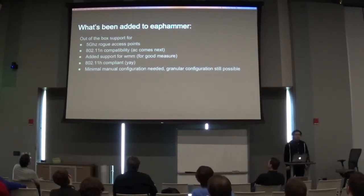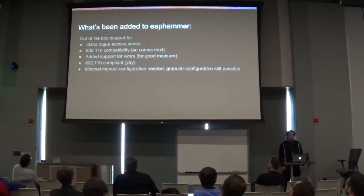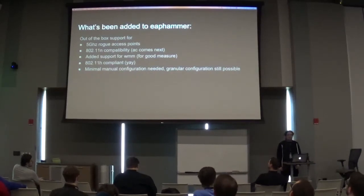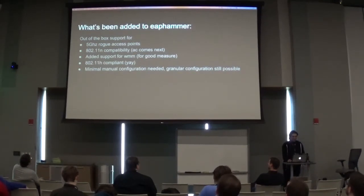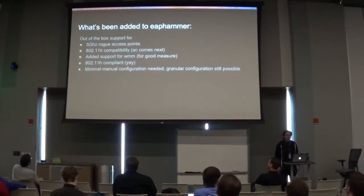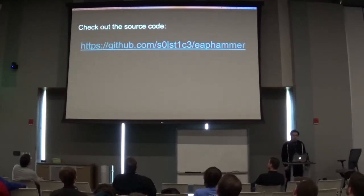We've added that to ePammer as well. So to summarize everything we've added: out-of-the-box support for 5 gigahertz rogue APs, 802.11n compatibility (AC is part 2), support for WMM for good measure, and we've made sure it's 802.11h compliant so you can do this without doing bad things. The cool thing is we've done all this by providing as little manual configuration as possible — you can just create the access point and it works, which is great for pen testers because we're really lazy. Check out the source code at github.com/solstice/ePammer. That's pretty much it — any questions?